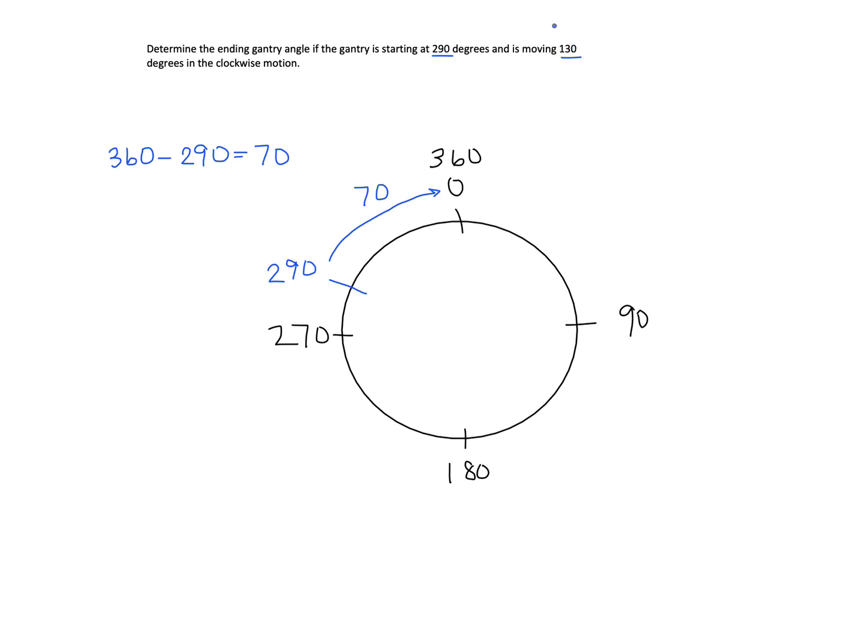But our total motion is 130. So to determine the next motion we would subtract 130, our total gantry motion, minus that motion we already did, which is 70. So 130 minus 70 is equal to 60 degrees.